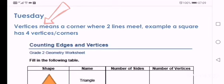Vertices means a corner where two lines meet. Example, a square has four vertices or corners.